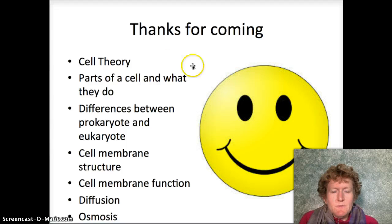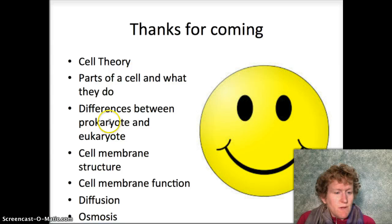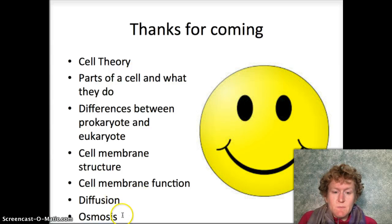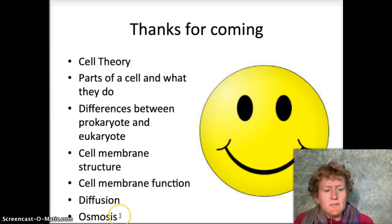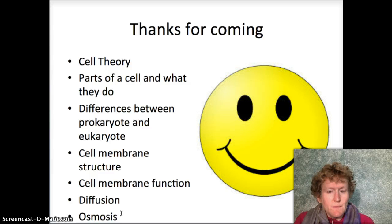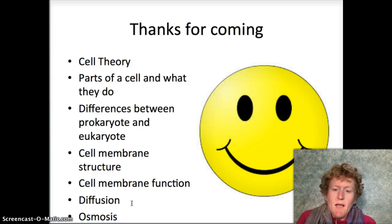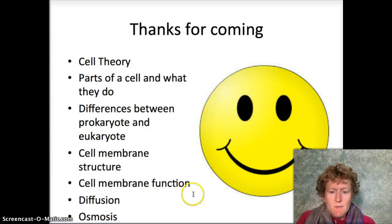Thanks for coming. We've talked about cell theory, parts of a cell and what they do, differences between prokaryotes and eukaryotes, cell membrane structure and function, and diffusion. We didn't get to osmosis, but all you need to know is that osmosis is the diffusion of water — it's a special case of diffusion where water is moving. Thanks so much, I hope this review is useful. Leave a comment if you'd like to see something added.